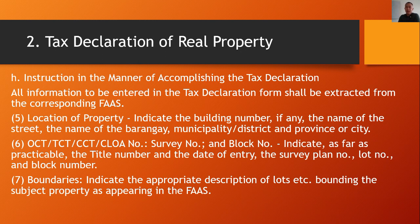All information in the tax declaration form shall be extracted from the corresponding FAAS. For the location of the property, indicate the building number if any, the name of the street, the title number, the survey plan lot number, and the boundaries — indicating the appropriate description of lots bounding the subject property as appearing in the FAAS.